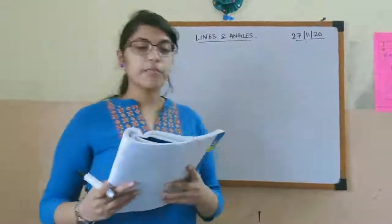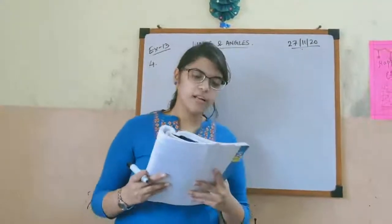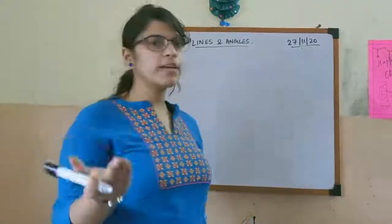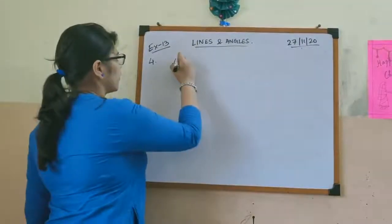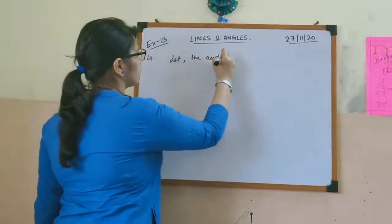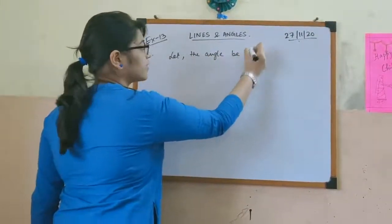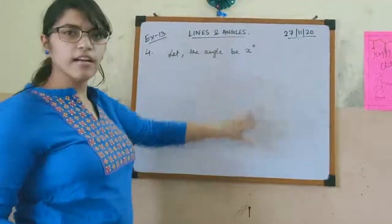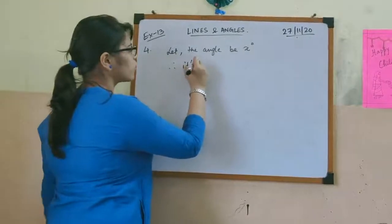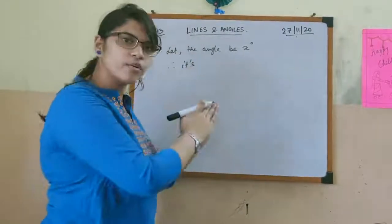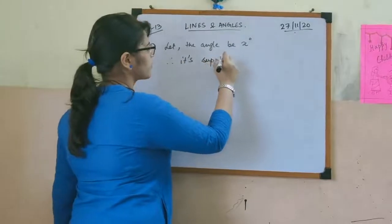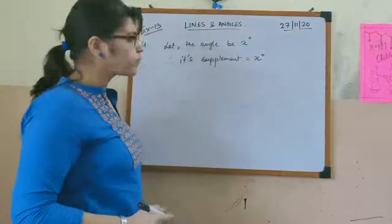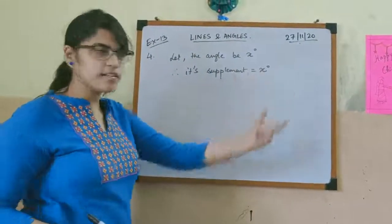Next we have sum number 4. The question says: find the angle which is equal to its supplement. So that means the two angles will be equal. Let the angle be x degrees. Since its supplement is also equal to it, we write its supplement equals x degrees as well.